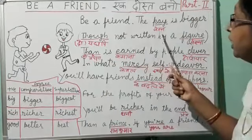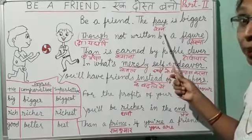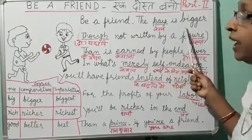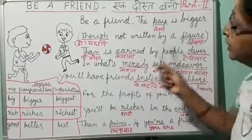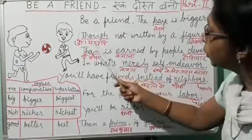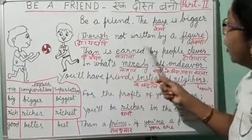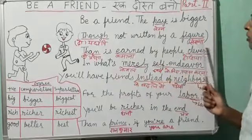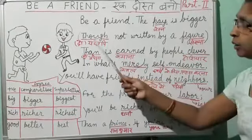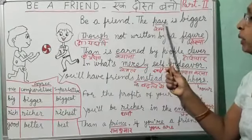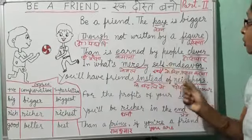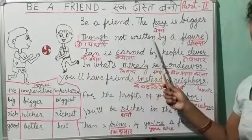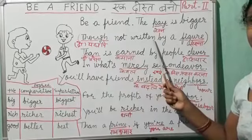Dost banne ka jo vetan hai, payment hai, woh bada hai. Though not written by a figure, yet us payment ko sankhya mein nahi likha ja sakta hai.